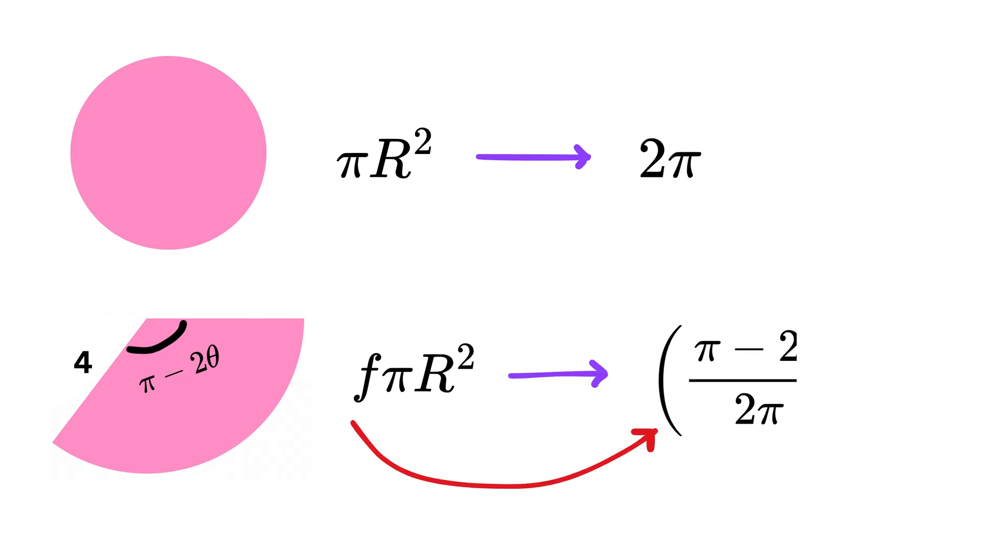Area of the full circle is given as π r squared. So, the area of this sector will be a fraction of this π r squared, right? Since the full circle is 360 degrees, or 2π, therefore, this fraction will be π minus 2θ upon 2π times π r squared.